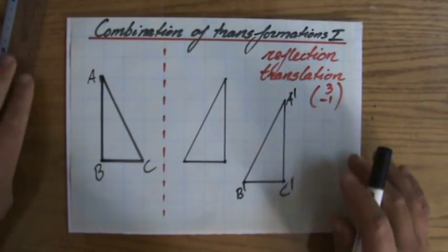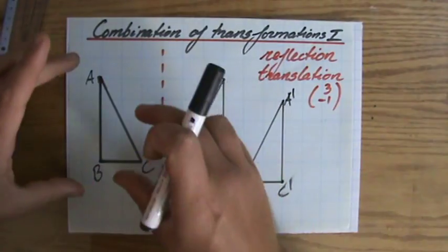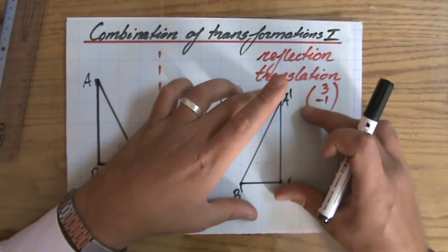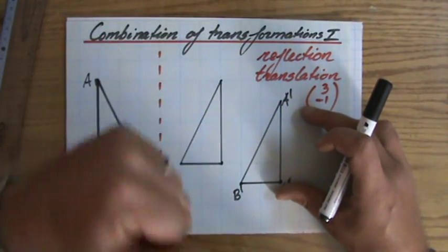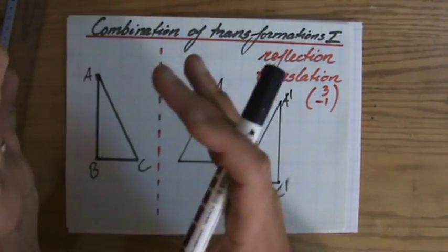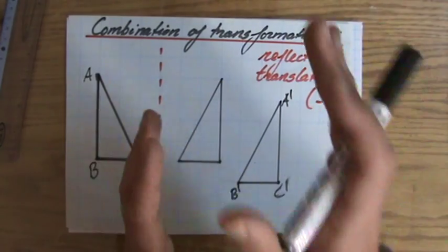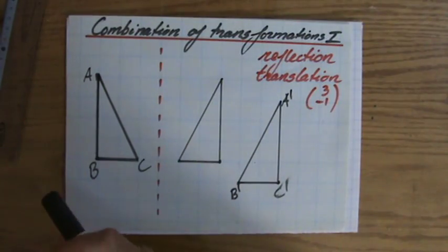Now, usually these types of questions are asked that they give you the initial figure and then the figure after a combination of transformations. And then you have to say, well, first it was in this case a reflection and then a particular translation. And I'll show you how to do that in the next video. So I'll see you there.